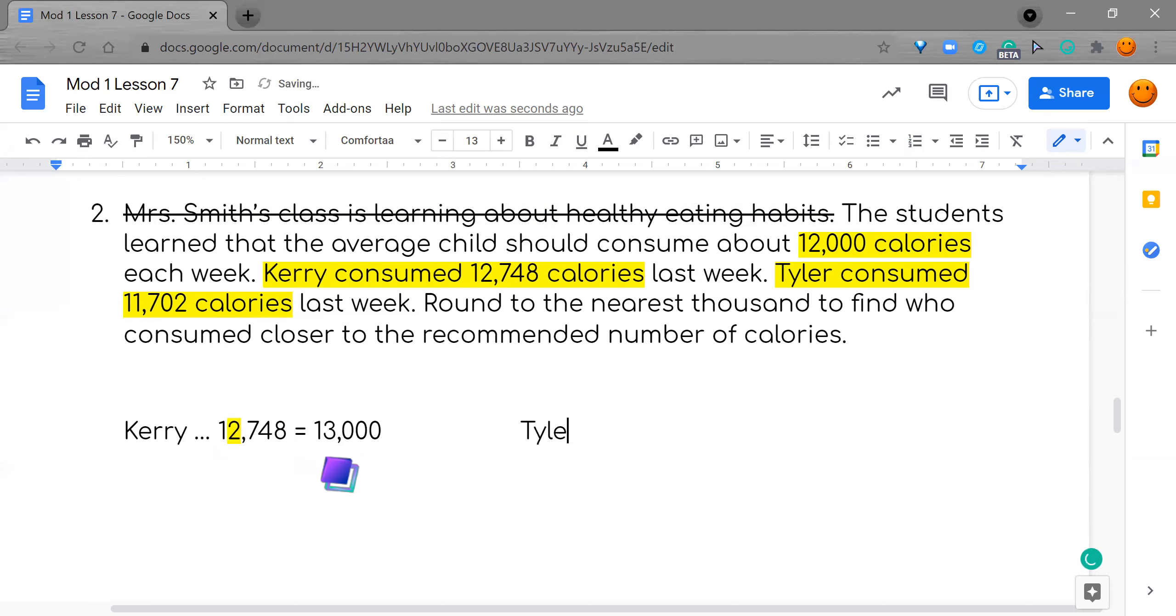Now it's time to do Tyler. We're doing the exact same thing. We're trying to see who got the closest. So I'm going to go ahead and highlight my number here. So the seven, is it asking the one to raise its score or let it rest? Yes, raise the score. So I'll put the one down. My one becomes a two. Great job. And zeros in its place.